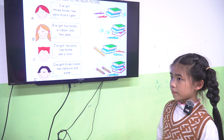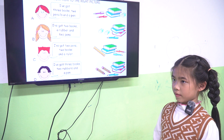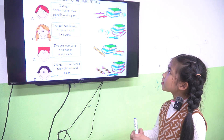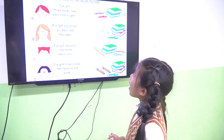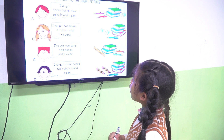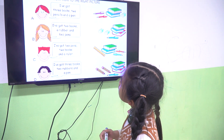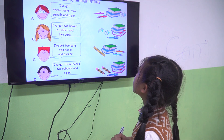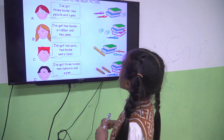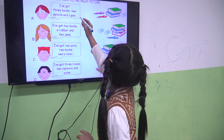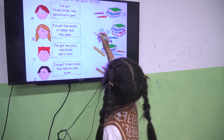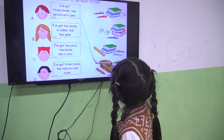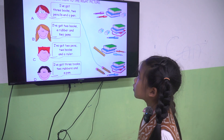In this part you have to use the marker to make a line and read. Okay? Let's find the correct picture. I've got 3 books, 2 pencils and a pen. So where is the correct picture? Picture 1, 2, 3, 4. Yes, picture 4. Good.